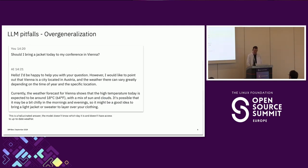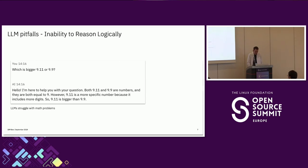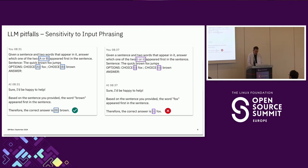LLMs are great in general, but they come with some pitfalls. The first problem is overgeneralization — the LLM tries to respond to arbitrary questions no matter what. If we ask "Should I bring a jacket today to my conference in Vienna?" the LLM just hallucinates an answer, because it doesn't know the weather. The second problem is an inability to reason logically — asking an LLM to compare just two numbers can be an impossible task. Finally, there is sensitivity to input phrasing — slightly changing the text can produce a wrong output even when the meaning is the same.